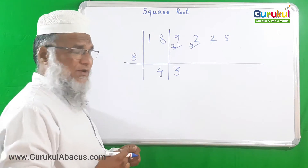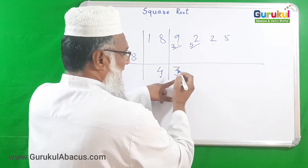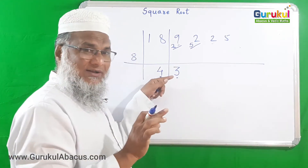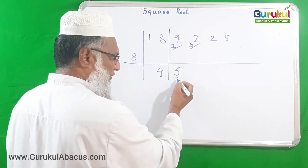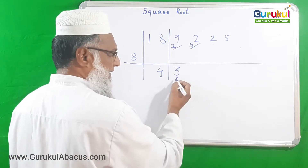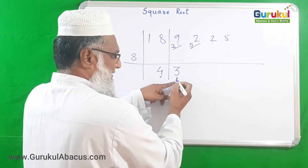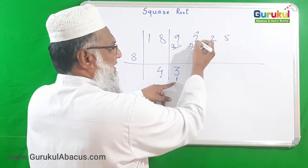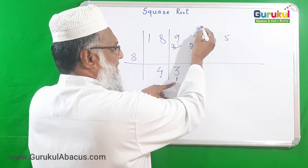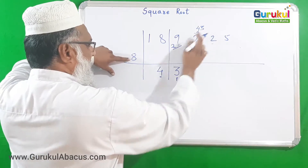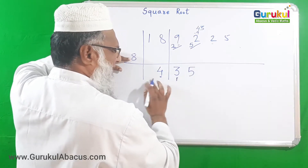Before taking 52 for further division, we must subtract the dvandva of 3. Since 3 is a single digit, the dvandva is simply the square: 3 × 3 = 9. Subtracting 9 from 52 gives 43. So now we work with 43 and our divisor 8. We try 8 × 5 = 40, which is suitable.